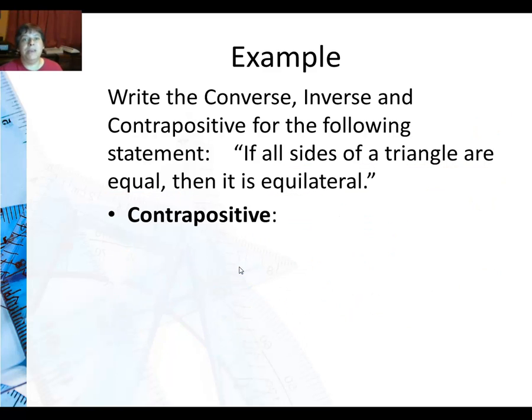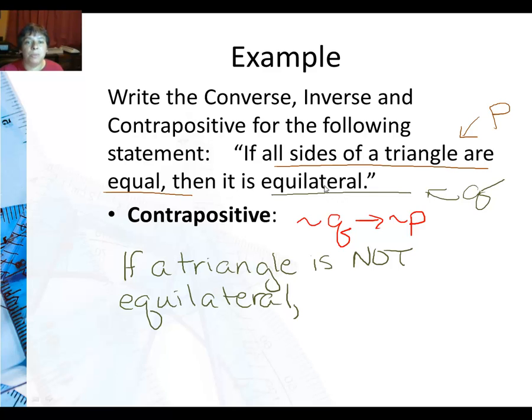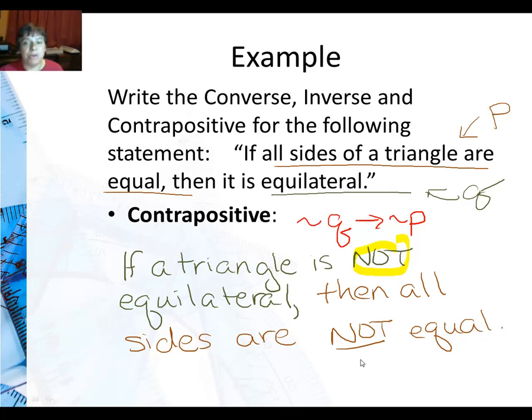Finally we're going to do the contrapositive which is doing both. You're putting in the nots and you're switching. So here's my original P and Q. This is what I'm trying to get to: if not Q then not P. So if a triangle is not equilateral. I took this last part put it first with the if and put the word not in. Then I take the first part my original P and I put it after then and I still have to put in the not. So then all sides are not equal. So there's my if on my original conclusion. It's switched. Nots. So my nots are in there and both are switched. That is contrapositive.